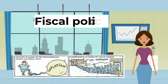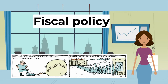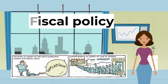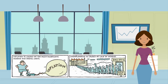Fiscal policy is the amount of government spending in the economy. Changing the total level of government spending and taxation can have a significant impact on the aggregate demand for goods and services, and therefore on output, employment and prices.